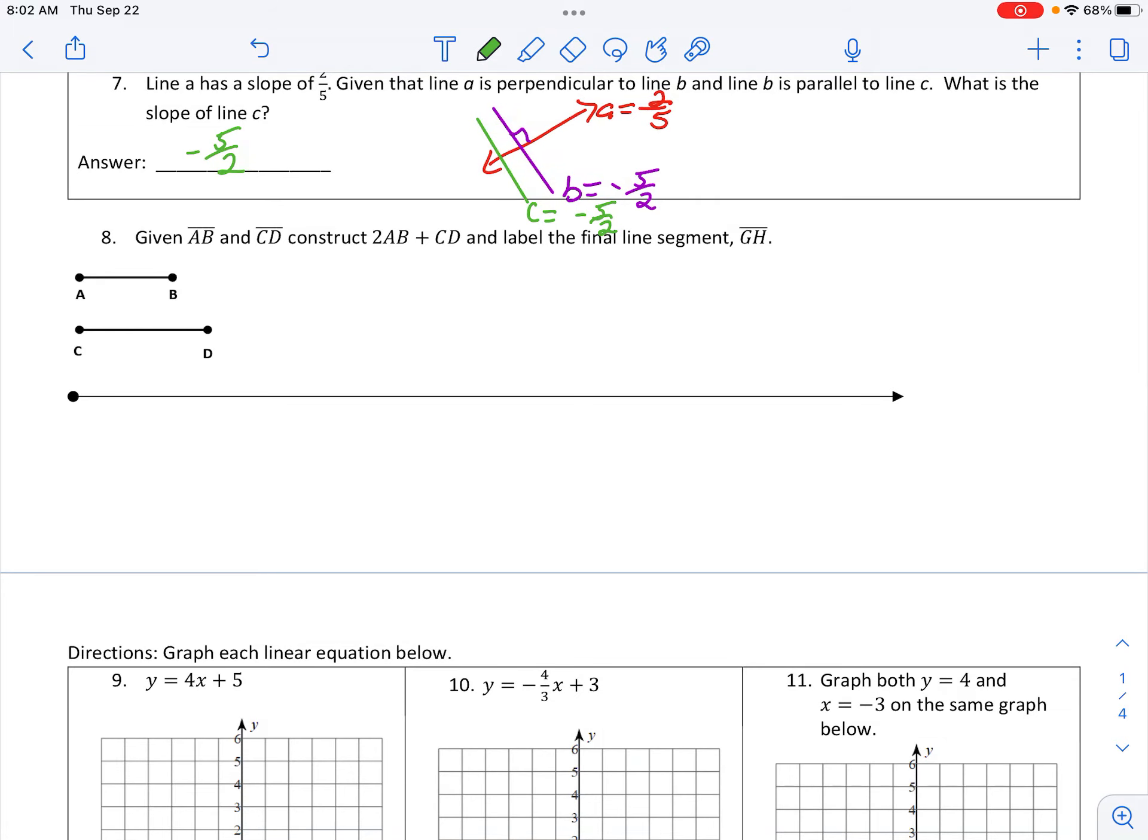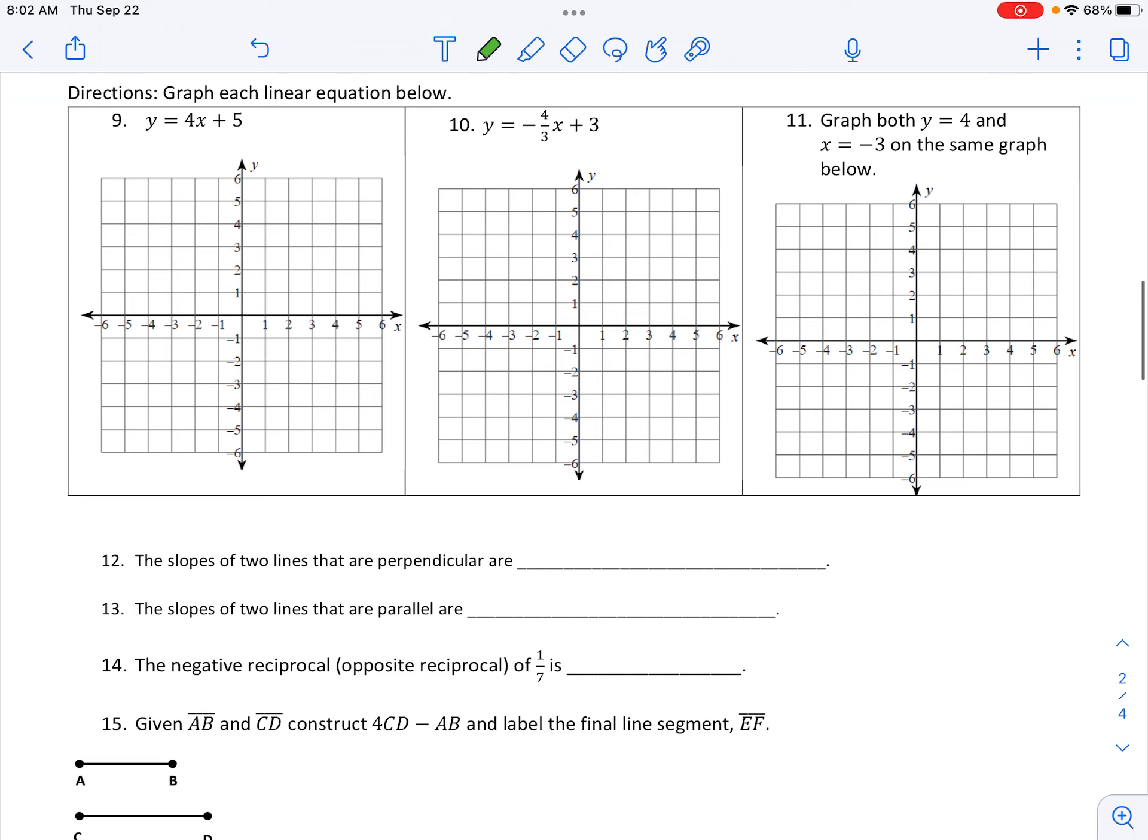Okay, number eight I'll come back to at the end. Number nine, graphing these lines. Y-intercept of five. Now it's four over one, which is gonna take me off this graph, so instead of going up four right one, we're gonna go down four left one.